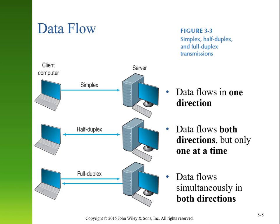Full duplex allows us to send information in both directions at the same time. In some networks, we would dedicate more bandwidth for one direction versus another. Most home networks receive more information than they send, so they dedicate more bandwidth towards reception and less bandwidth towards broadcast.